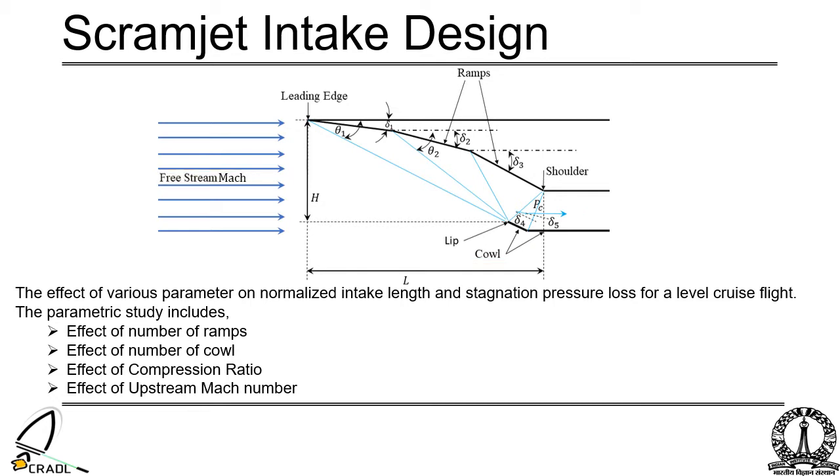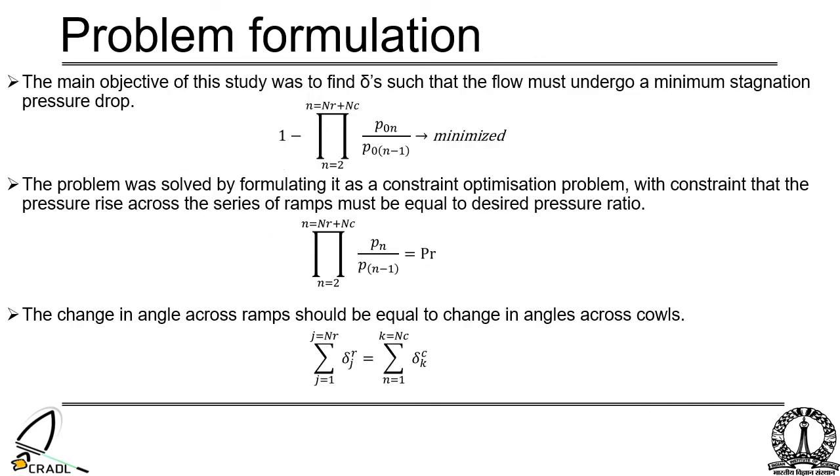In this study, the effect of boundary layer is neglected. The air is assumed to be an ideal gas. Also, the leading edge is considered to be sharp. Various parameters are used to quantify the inlet efficiency including kinetic energy efficiency, normalized entropy rise, and stagnation pressure recovery, among which stagnation pressure recovery is widely used.